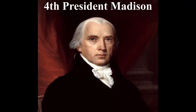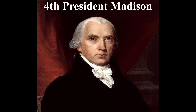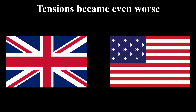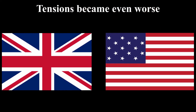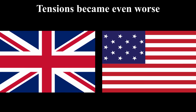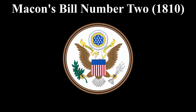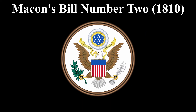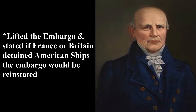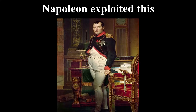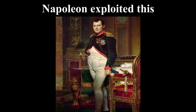Incumbent president James Madison had a tough decision. Tensions between America and Britain had gotten even worse and war was on the horizon. One of the first actions he took was via the Macon's Bill. It lifted the embargo and tried to relieve tensions, but wouldn't last long and would be reinstated. Napoleon saw an opportunity and took advantage.